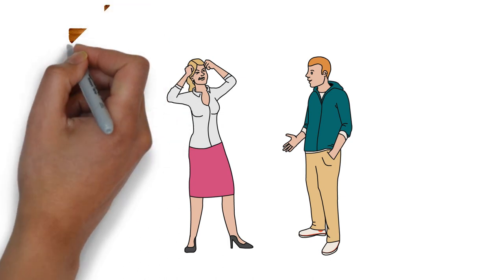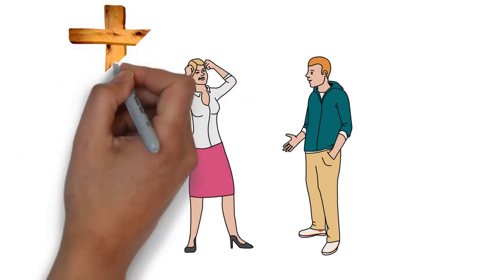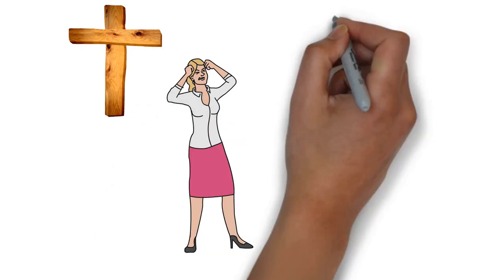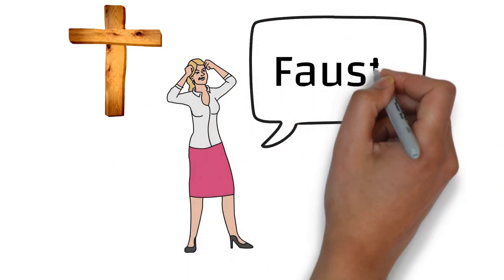As she surrenders to the judgment of God, Mephistopheles urges Faust to leave with him before they're found. As they leave they hear Gretchen crying out Faust's name.